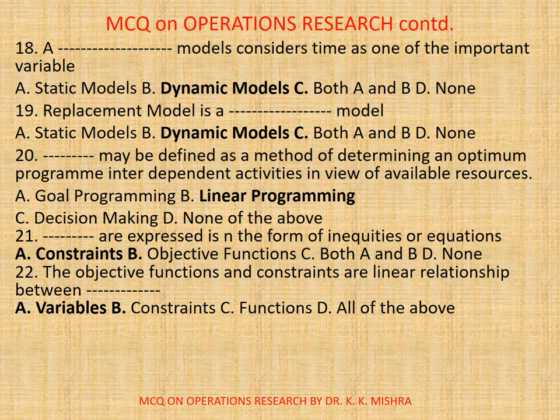Question 21. Dash Models are expressed in the form of inequalities or equations. A, Constraints. B, Objective Function. C, Both A and B. D, None. The correct option is A, Constraints — they are expressed in the form of inequalities or equations. As far as the objective function is concerned, that is linearly expressed.